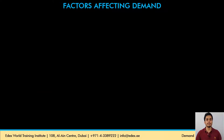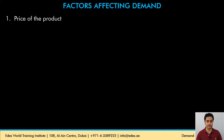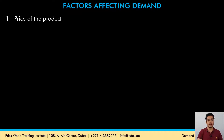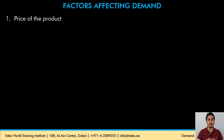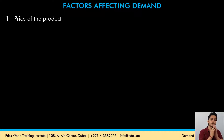Next, let's understand the factors that affect the demand for a product. The first and most important factor is the price of the product itself. When the price of a product falls, it becomes cheaper and we as consumers buy more of that product. When the price rises and it becomes expensive, we tend to buy less — because we tend to buy products that are cheaper and avoid those that are expensive compared to other products.